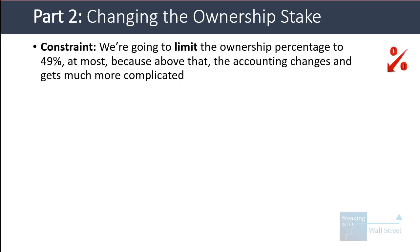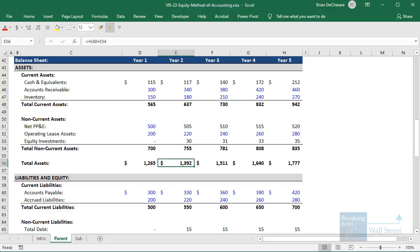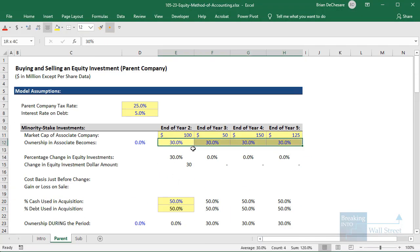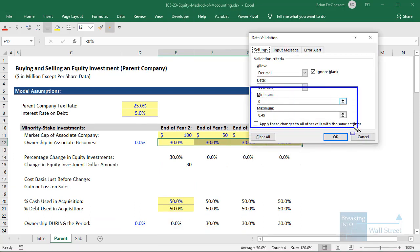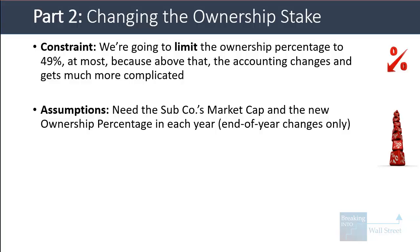Now let's go to part two and talk about what to do when the ownership stake changes. One big constraint is that we're going to limit the ownership percentages to 49% at the most, because above 50% — once you have control — the accounting changes and gets a lot more complicated, which we don't have time to cover in this quick tutorial. Using data validation with alt-D-L, I've enforced this maximum of 0.49 so that the ownership cannot go above that at all.